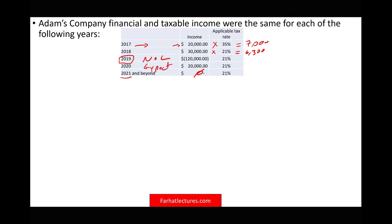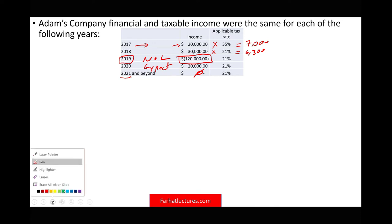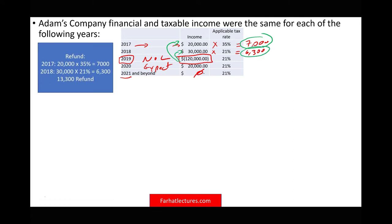Under the old rules, we would take this $120,000 and only look forward, carrying it as a deferred tax asset. But under the new CARES Act rules, we go back first — back to 2017, claim a refund of $7,000; go back to 2018, claim a refund of $6,300. So we're going to get a total refund of $13,300. We used $20,000 of NOL against 2017, leaving a remaining NOL of $100,000, then used $30,000 against 2018, leaving $70,000 of NOL remaining.